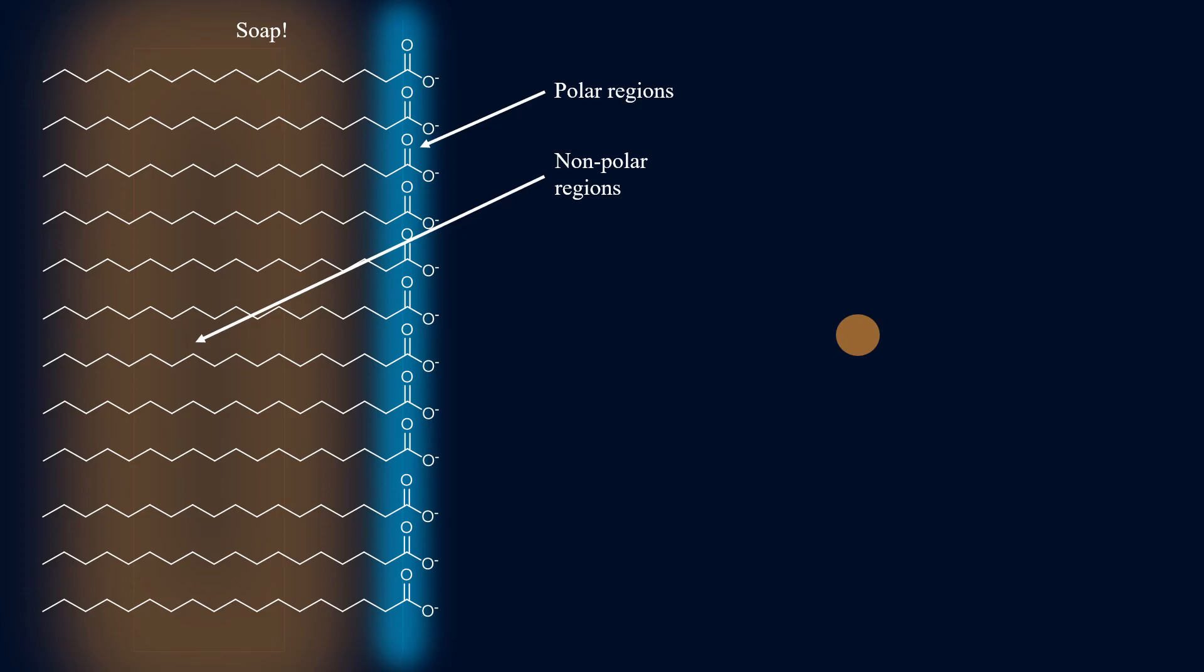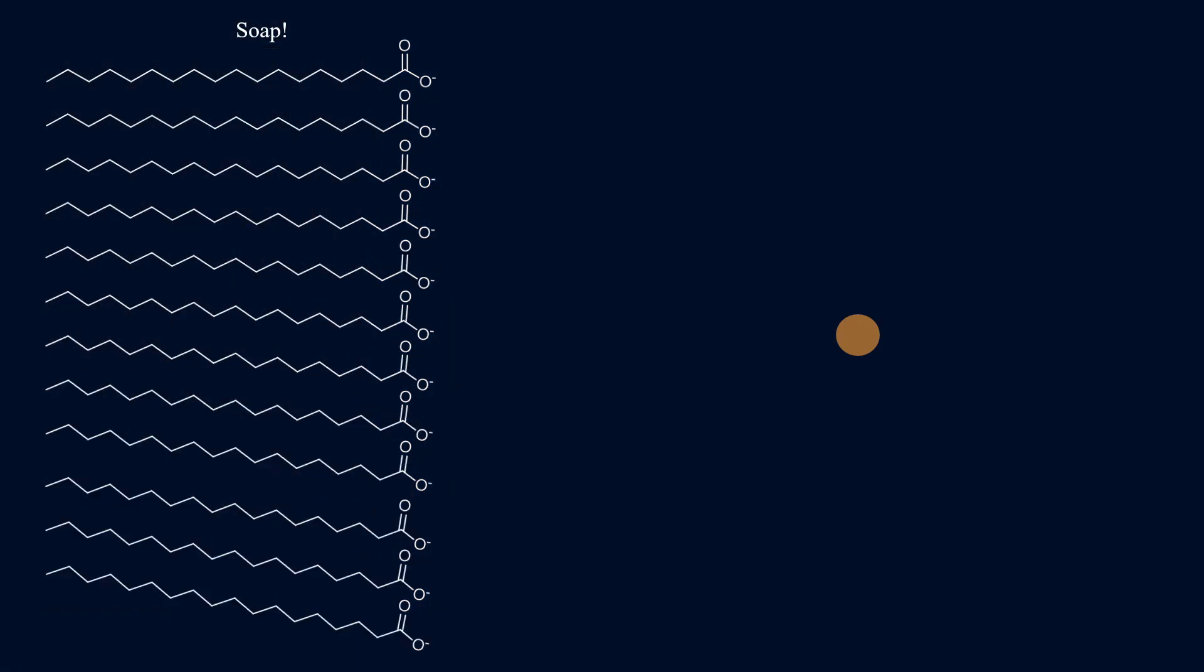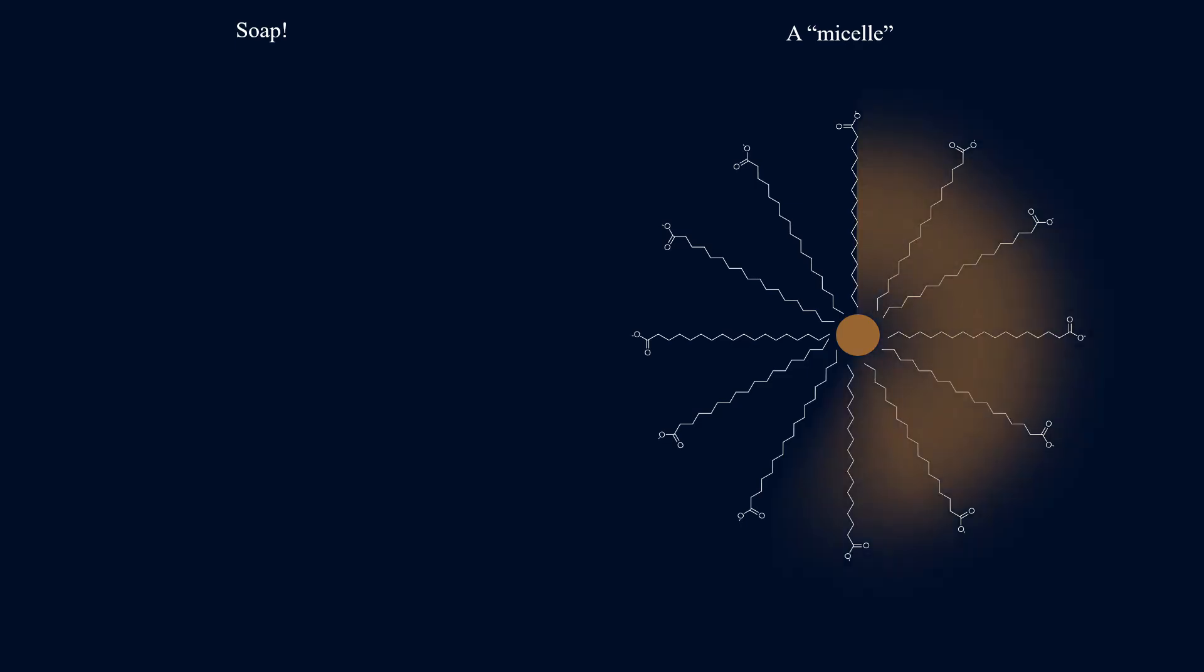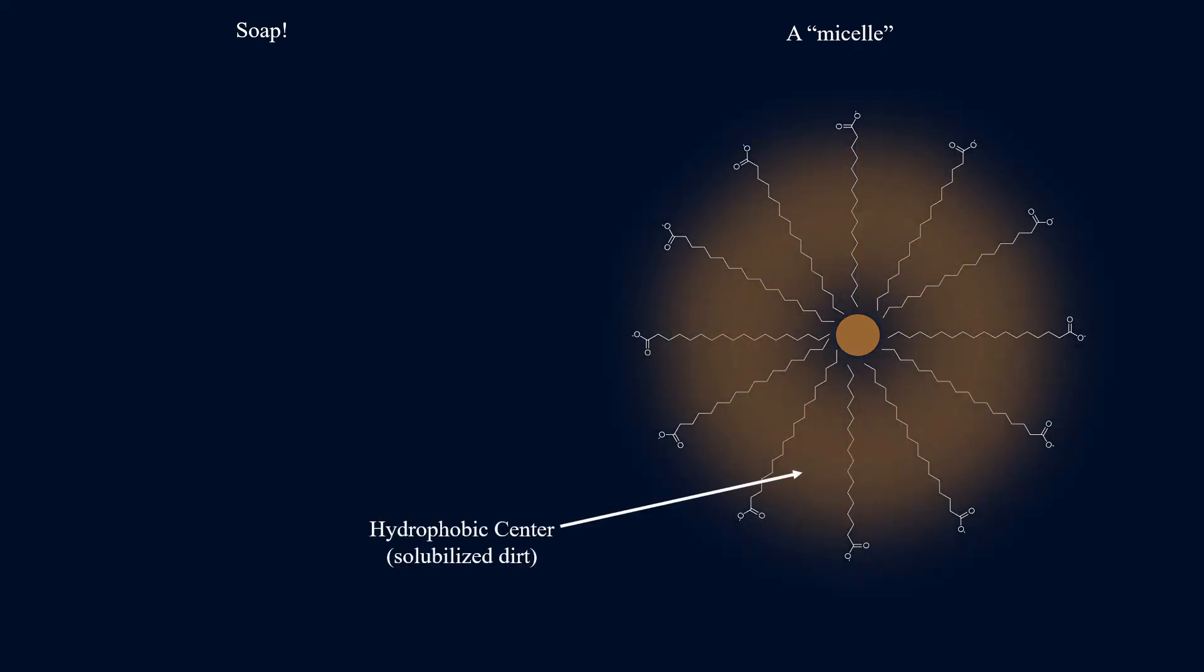Now what this allows soap to do is to encircle the dirt forming a structure known as a micelle. A micelle is a spherical structure in which the hydrophobic tails of the fatty acid salts are pointed inward to help solubilize the dirt.